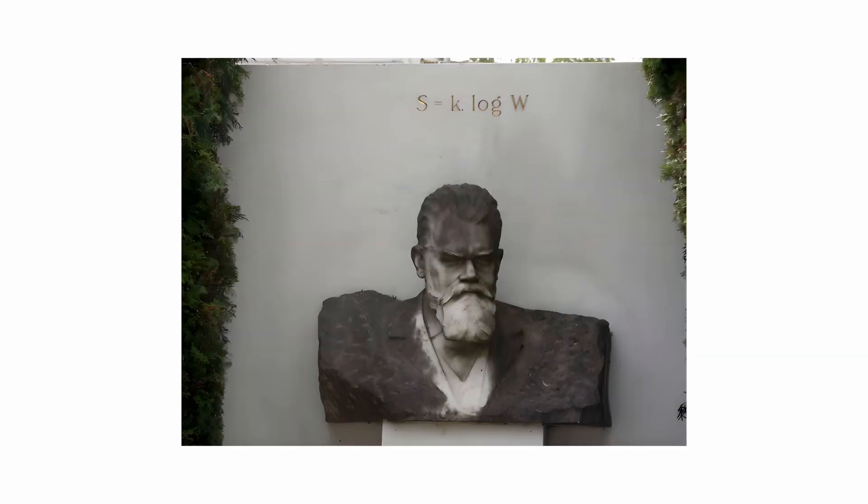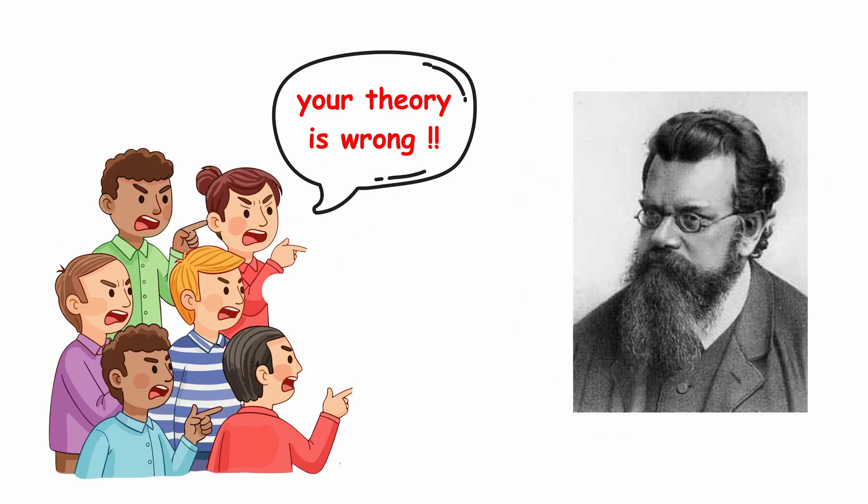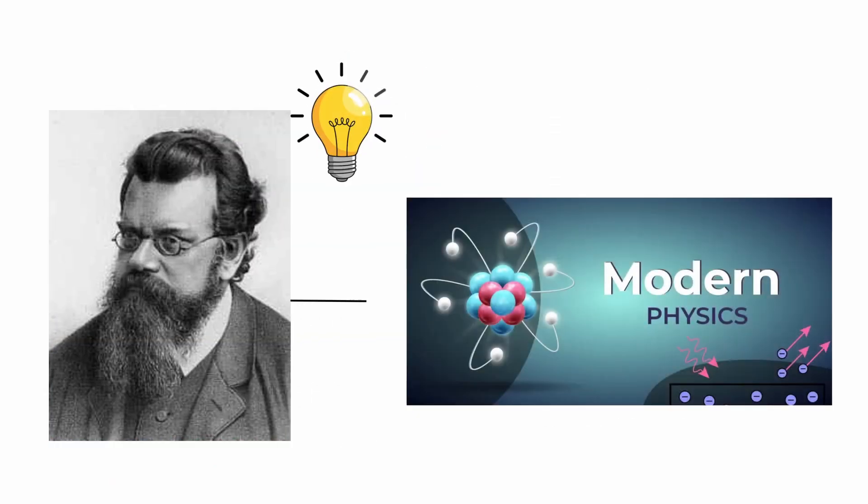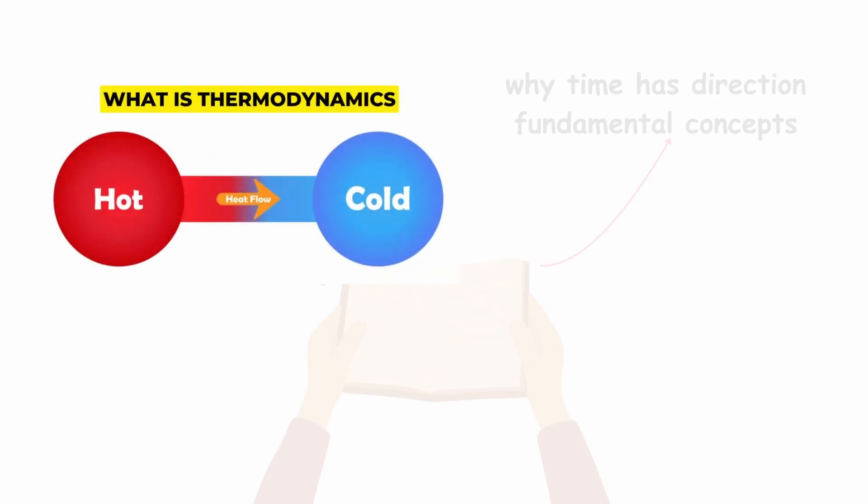Boltzmann's formula, even engraved on his tombstone, bridges the gap between classical mechanics and statistical theory. Although his theory was harshly criticized during his lifetime, his ideas became a cornerstone of modern physics. His work explained why systems evolve toward disorder and why time has direction, fundamental concepts in both thermodynamics and cosmology.